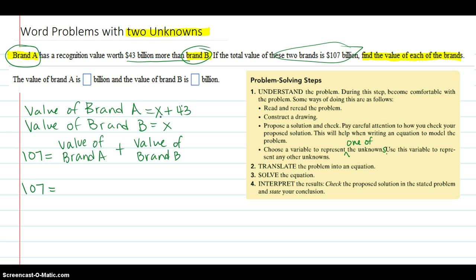So that is the value of brand A plus the value of brand B. We know the value of brand A we just figured out was X plus 43. We have an expression for that. And the value of brand B we know is X. So the first one plus the second one is 107.